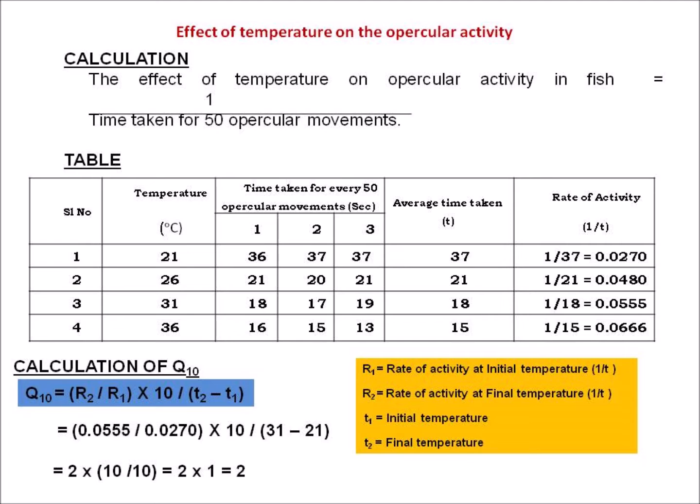Q10 can be calculated using the formula: R2 divided by R1, raised to the power of 10 divided by (T2 minus T1). Here, R1 is the rate of activity at the initial temperature, R2 is the rate of activity at the final temperature of 31 degree Celsius, T1 is the initial temperature, and T2 is the final temperature. When we substitute the values into the formula, we get the answer as 2.